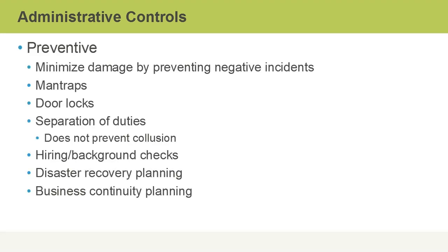Administrative controls have a number of categories, such as preventative controls. These types of controls minimize damage by preventing negative incidents or attempting to prevent them in the first place. It would include things like man traps — controlling access to a physical facility where the outer door must close before an inner door opens — and this will prevent people from tailgating or piggybacking, coming in behind you without being noticed.